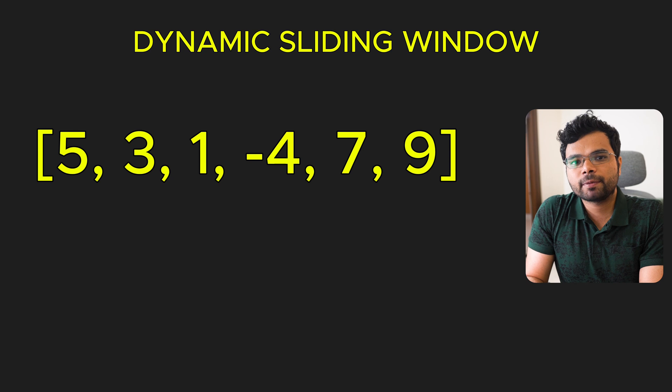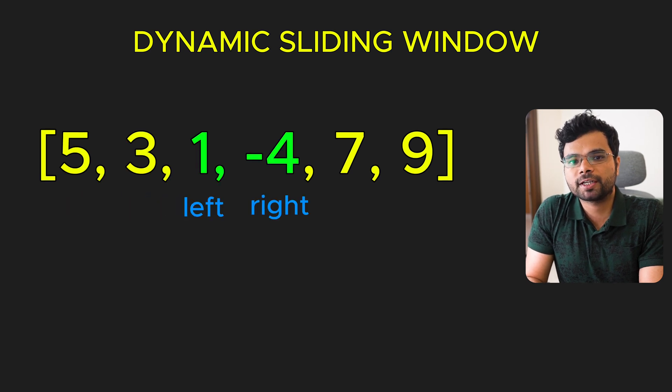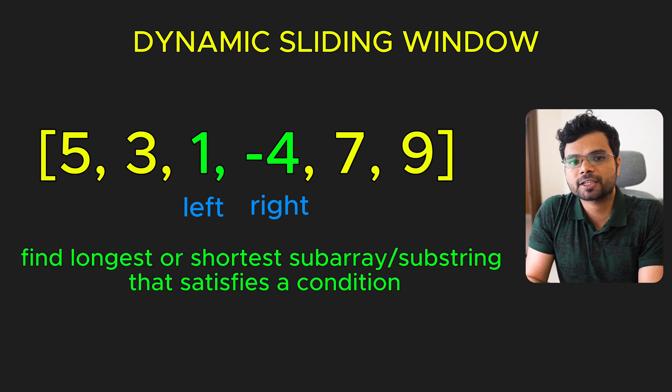Unlike a fixed window, a dynamic window expands and shrinks based on conditions. It is commonly applied to problems where the window size is not fixed, and the problem asks us to find the longest or shortest sub-array or sub-string that satisfies a condition.